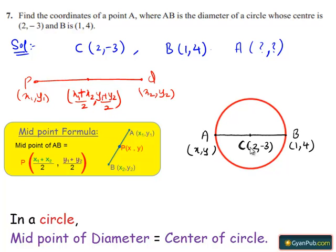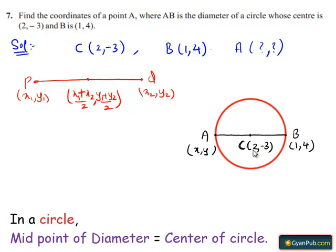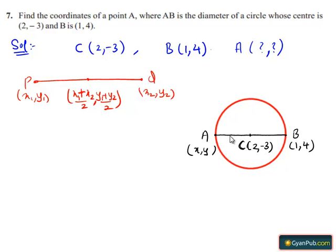We know that the center of the circle will always be the midpoint of the diameter of the circle. So by the midpoint formula, we have C(2, -3) equals to (x+1)/2, (y+4)/2.